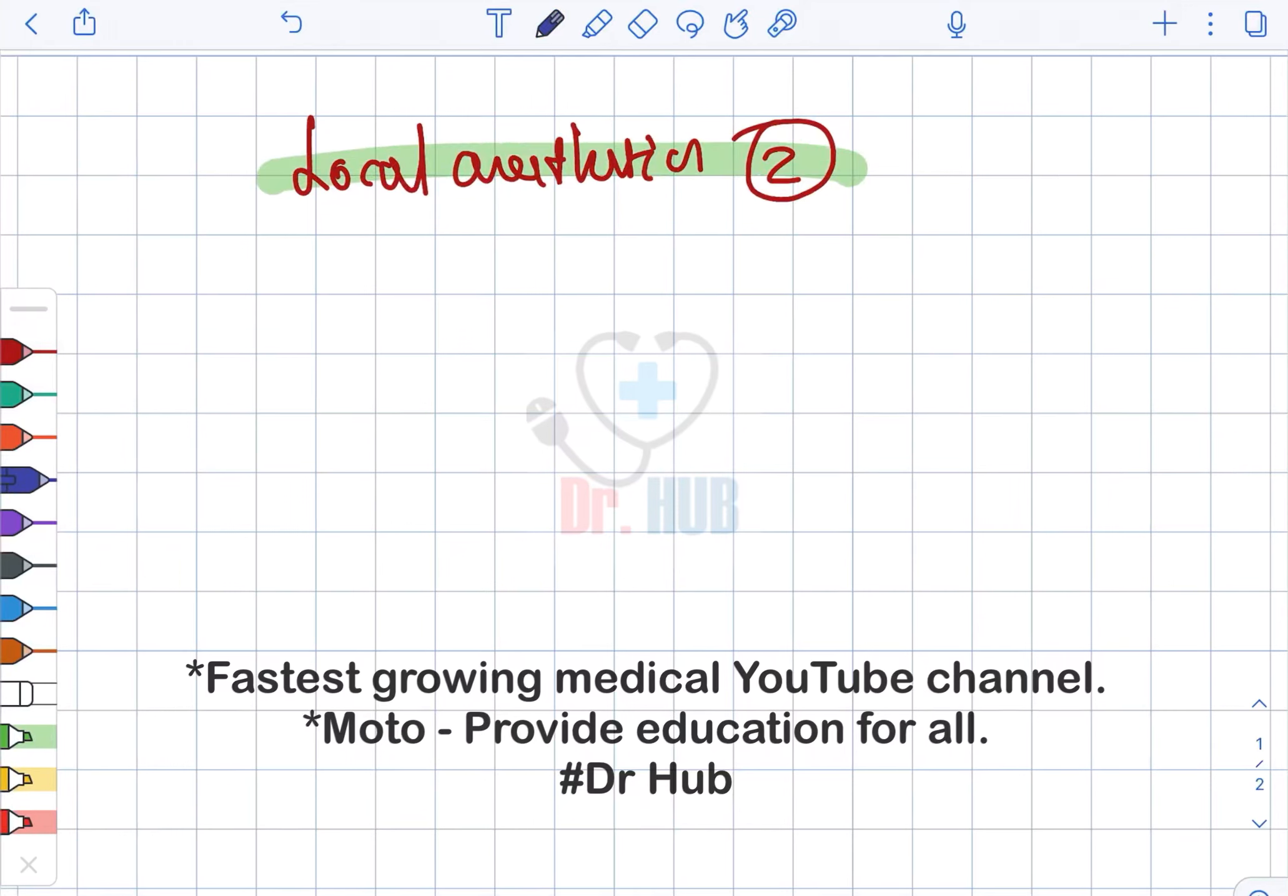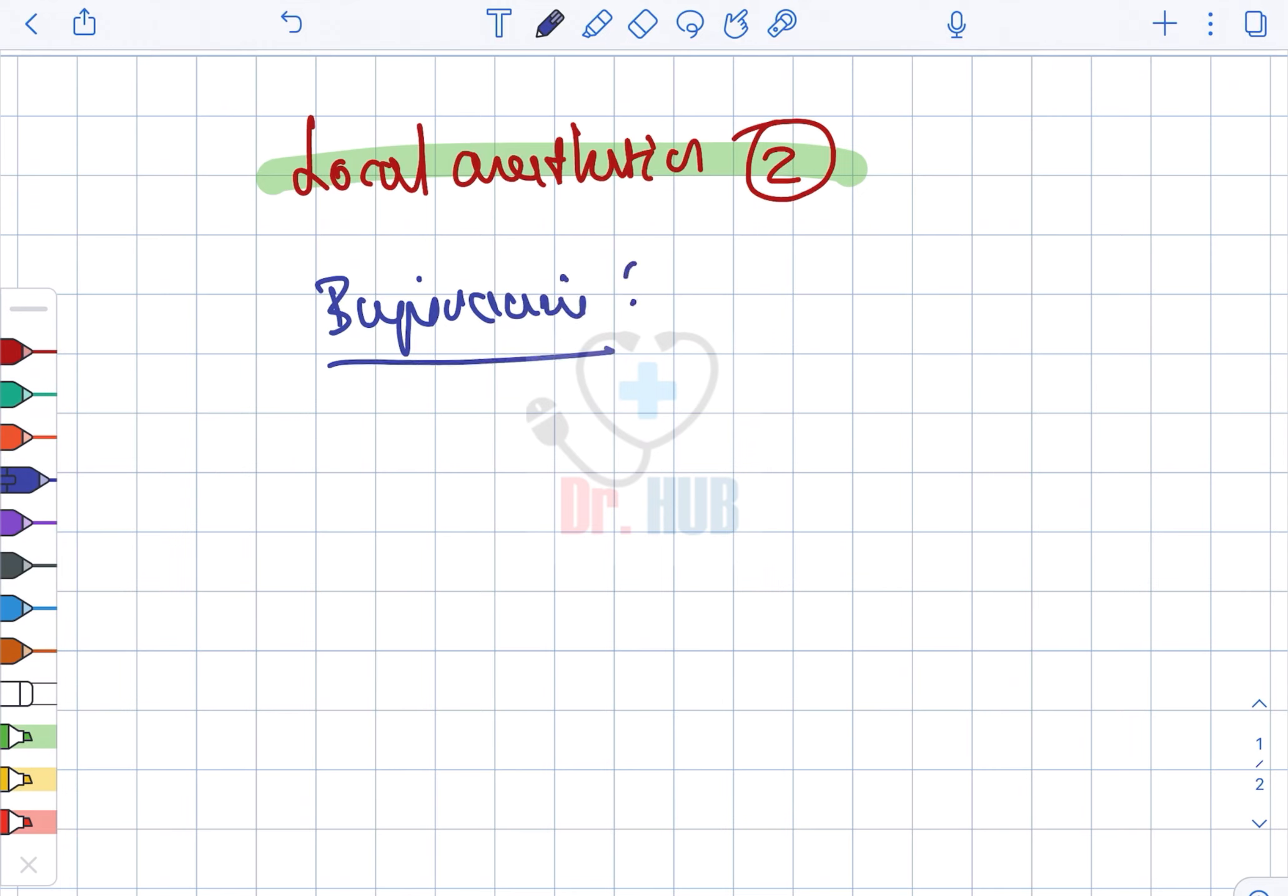Local anesthetics - now we are going to look at bupivacaine. Bupivacaine is long acting and it is the most cardiotoxic of the local anesthetics.